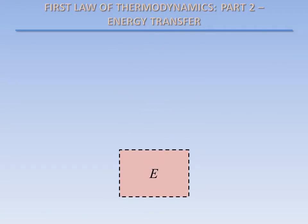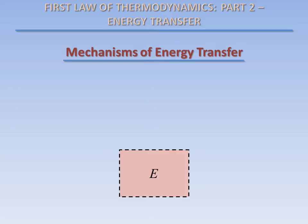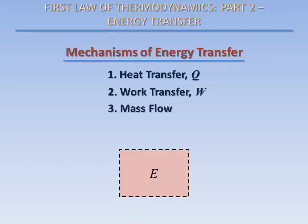Energy can enter or leave a system in three forms: heat transfer, work transfer, and mass flow. Let's take a closer look at each of these mechanisms of energy transfer.